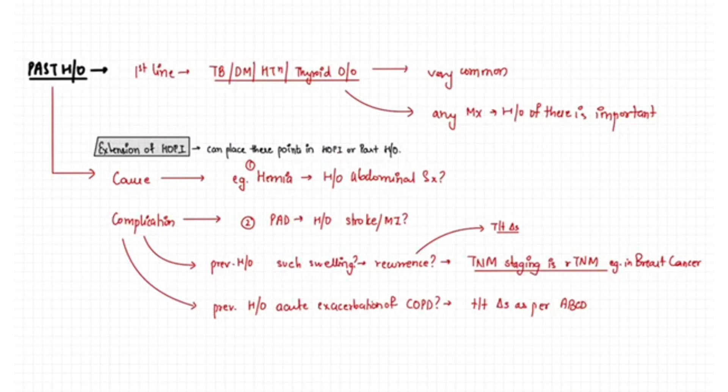They might interfere with the treatment that you are giving to the patient. Also, these have to be managed. Like if the patient has to be started on steroids, in that case if the patient has tuberculosis or diabetes, these conditions will get aggravated. Similarly, if the patient is being decided to get operated and the patient has hypertension, there are high chances the patient can go into massive bleed.